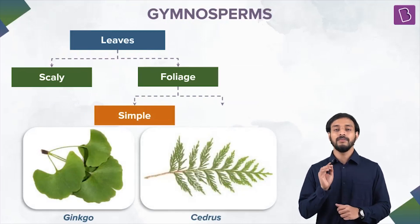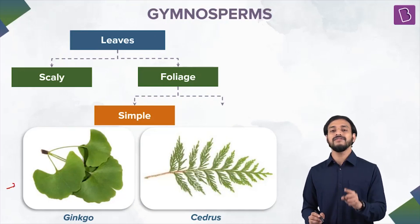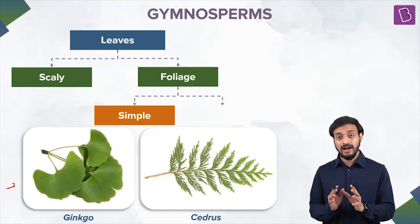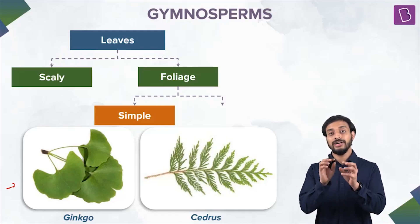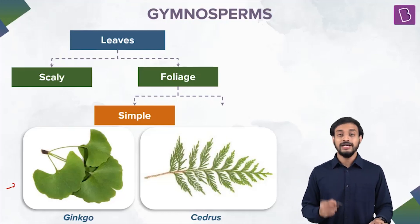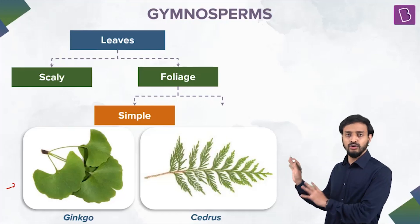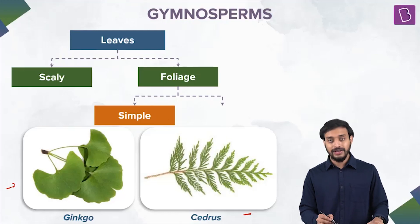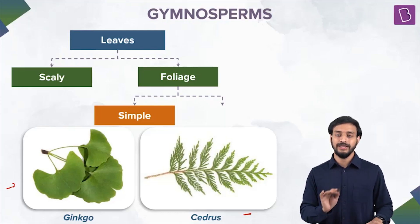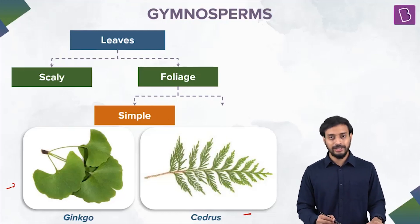Leaves can be simple or compound. Ginkgo is an example of simple leaves — simple leaves are undivided leaves. Citrus and cedar trees also have needle-like leaves where each needle is one simple leaf. These are simple leaves; they do not have leaflets.